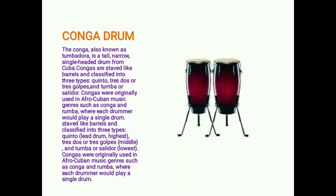The conga, also known as tumbadora, is a tall, narrow, single-headed drum from Cuba. Congas are staved like barrels and classified into three types: quinto (lead drum, highest pitch), tres dos or tres golpes (middle), and tumba or solidor (lowest). Congas were originally used in Afro-Cuban music genres such as conga and rumba, where each drummer would play a single drum.